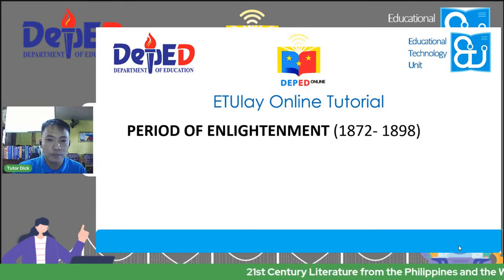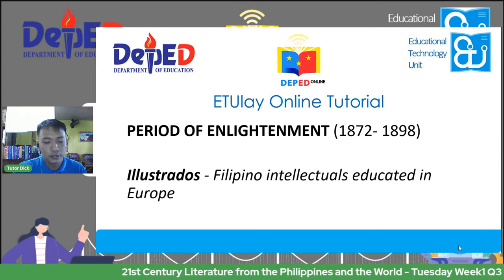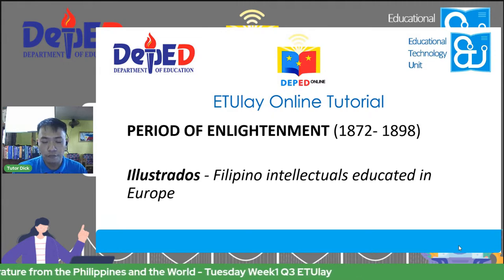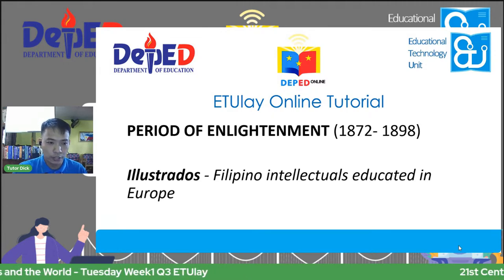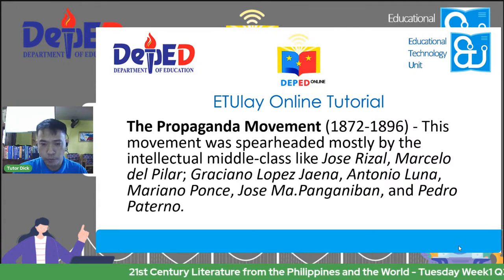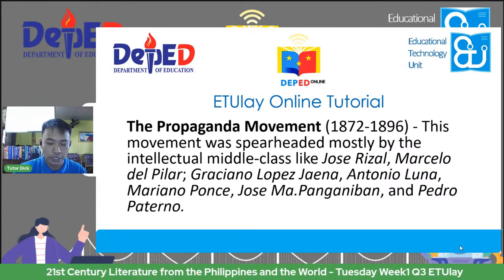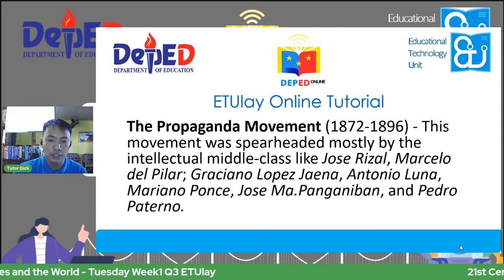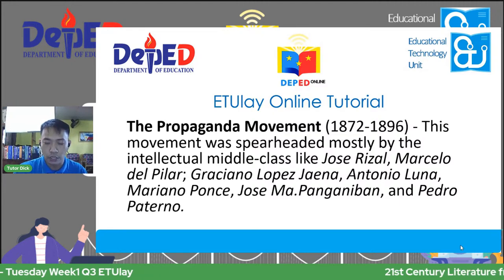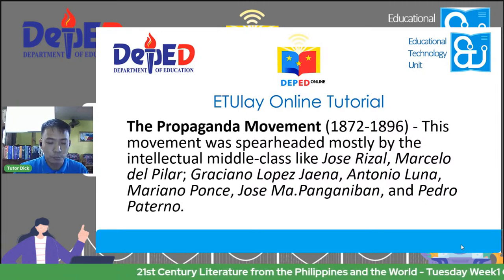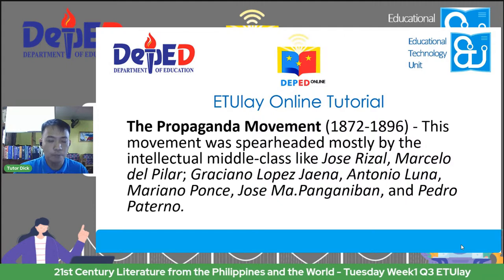The period of enlightenment from 1872 to 1898 saw the rise of the Ilustrados, who are Filipino intellectuals educated in Europe. We go back to the time of the Propaganda Movement, the movement that flourished from 1872 to 1896. This was spearheaded mostly by the intellectual middle class, like our very own Jose Rizal, Marcelo Del Pilar, Graciano Lopez-Jaena, Antonio Luna, Marciano Ponce, Jose Maria Pangiliban, and Pedro Paterno.